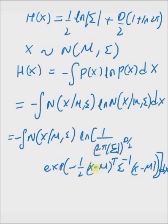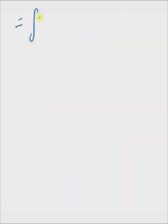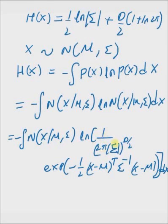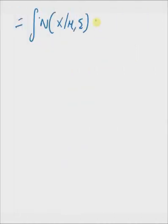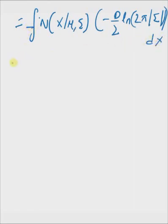By using the logarithm, we can separate these two components. The integral becomes the integral of the normal distribution N(x | mu, sigma) multiplied by the logarithm of 1 divided by (2 pi times determinant of sigma)^(d/2), which is basically minus d by 2 times the logarithm of 2 pi times the determinant of the covariance matrix dx, minus another term.